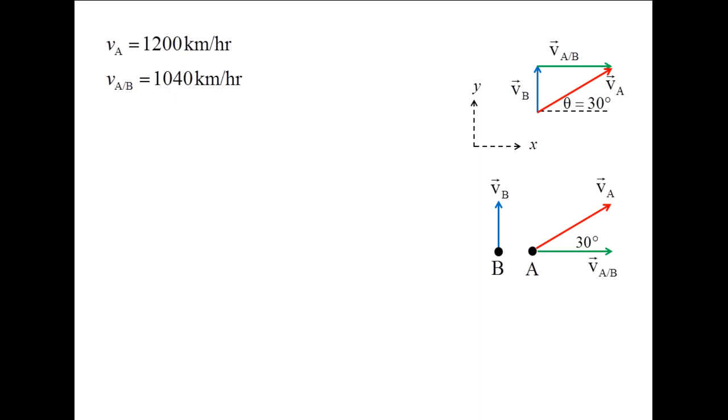The speed of Jet A is 1200 km an hour and the speed of Jet A relative to Jet B is 1040 km an hour.